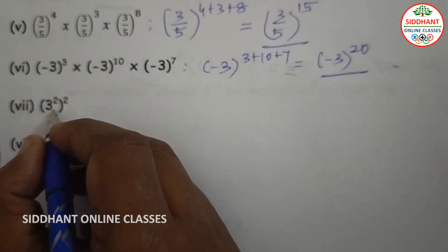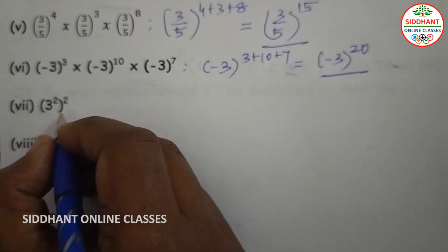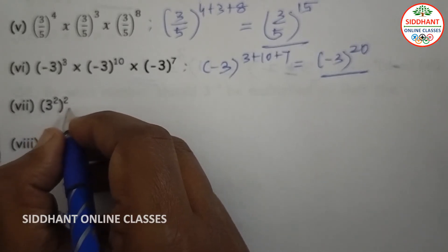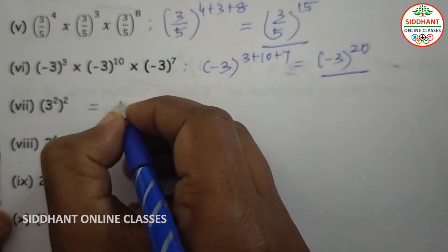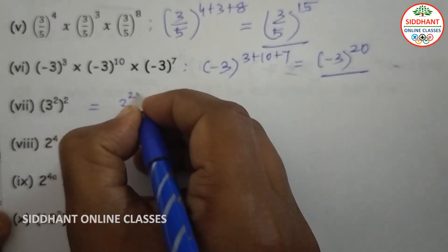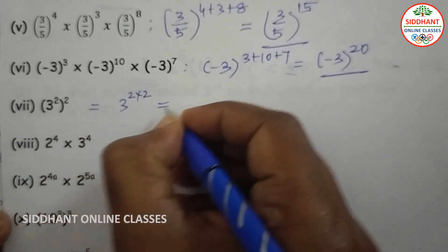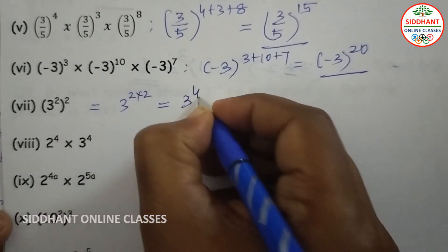Seventh one: 3 to the power of 2, whole power 2. We know a to the power of m, whole power n, equals a to the power of m times n. So 3 to the power of 2 into 2, that will be 3 to the power of 4.